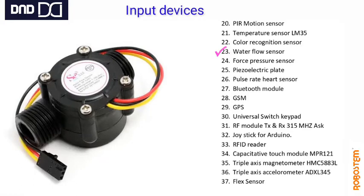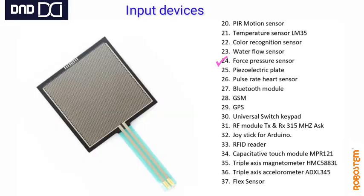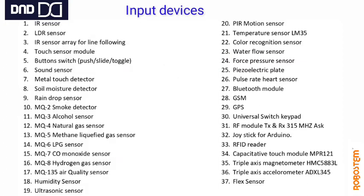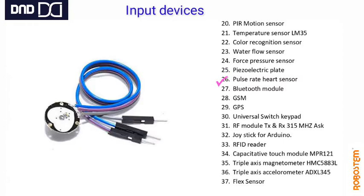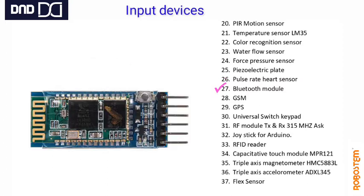Temperature sensor LM35 is small like a transistor but very effective. Color recognition sensor identifies different colors. Water flow sensor measures water flow. Force pressure sensor detects applied pressure. Pulse rate sensor monitors pulse. Bluetooth enables wireless communications.